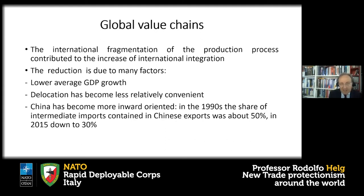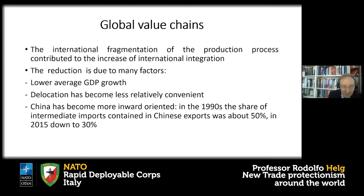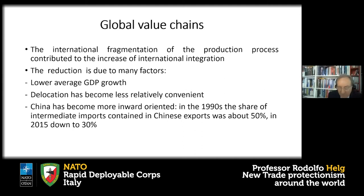China has also become more inward oriented. The China economic growth model was too biased toward export, which is unhealthy for a country over a long period. The Chinese government realized this and started reducing dependence on international markets. One measure: in the 1990s, the share of intermediate imports contained in Chinese exports was about 50%; by 2015 it was down to 30%.